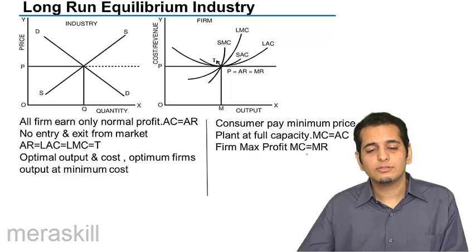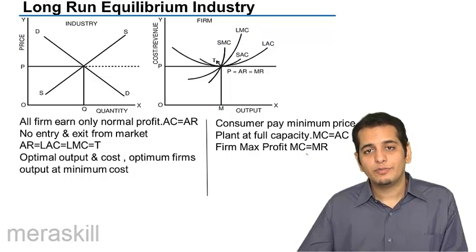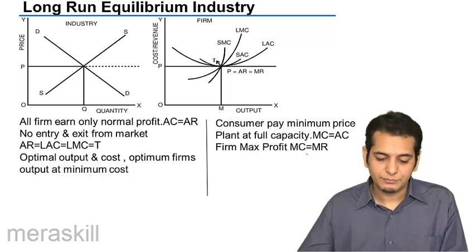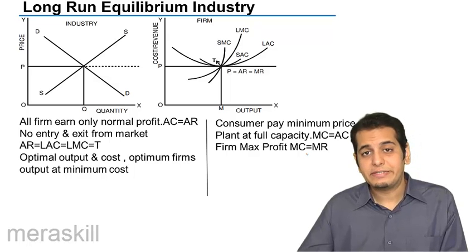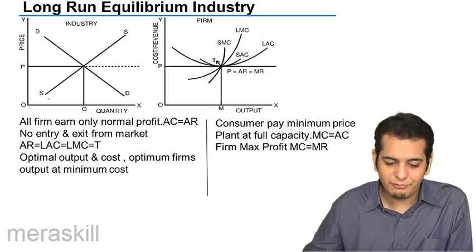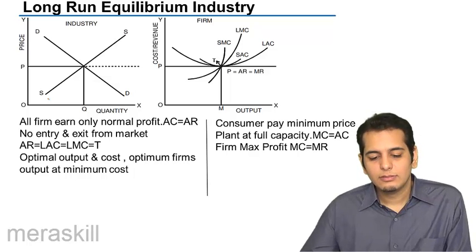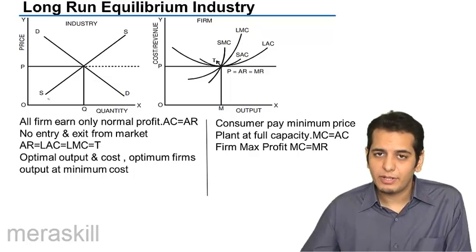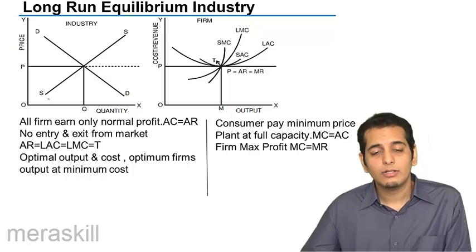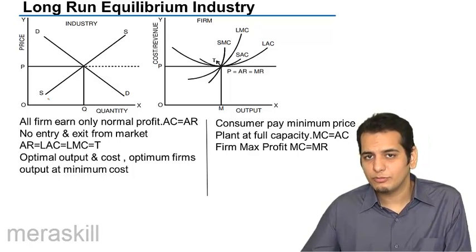Now, let's see what is the long run equilibrium of the industry in perfect competition. We've already done this, so let's do this in detail now. In the first graph we have the industry price determination, and in the second graph we have the long run equilibrium for the firm.